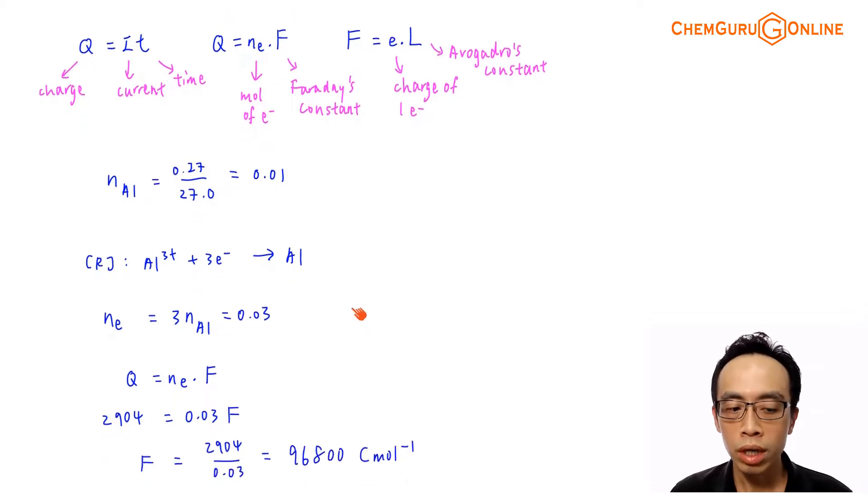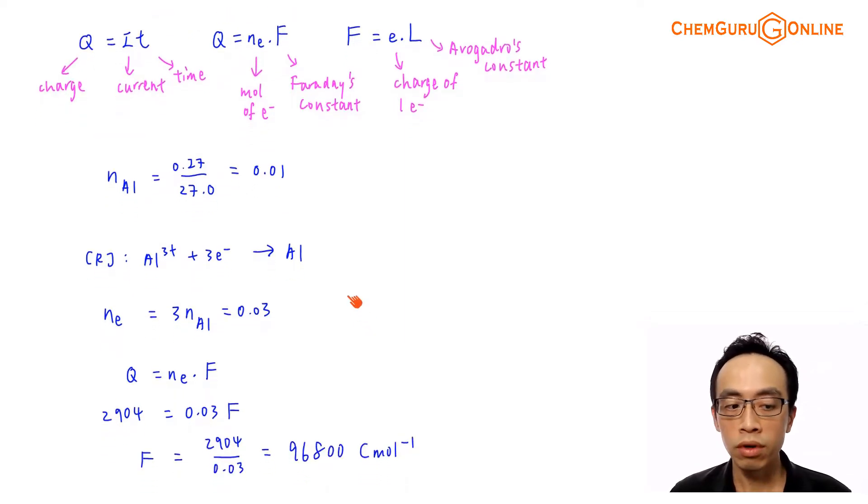The next thing we want to do is we want to determine the number of moles of electrons involved in this reduction. So the discharge or the reduction at the cathode is Al3+ plus 3 electrons, to give me Al. The mole ratio between electron to aluminum is 3 electron to 1 aluminum. So the number of moles of electron will be 3 times the number of moles of aluminum, which is 0.03. 0.01 times 3, which is 0.03.